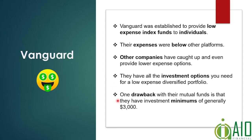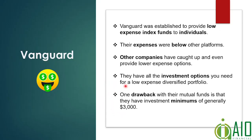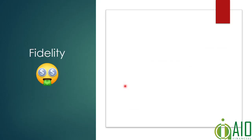One of the drawbacks with Vanguard's mutual funds is that the initial minimum investment is $3,000. So if you're just starting off and investing little by little, this might not be a good platform, especially if you're wanting to get into the target date funds.